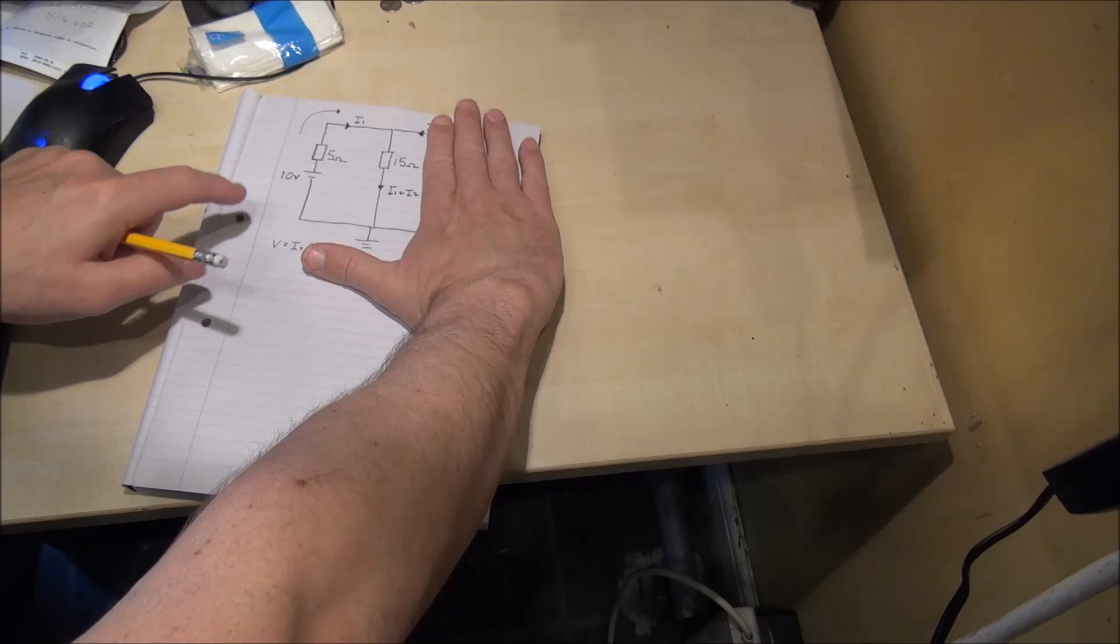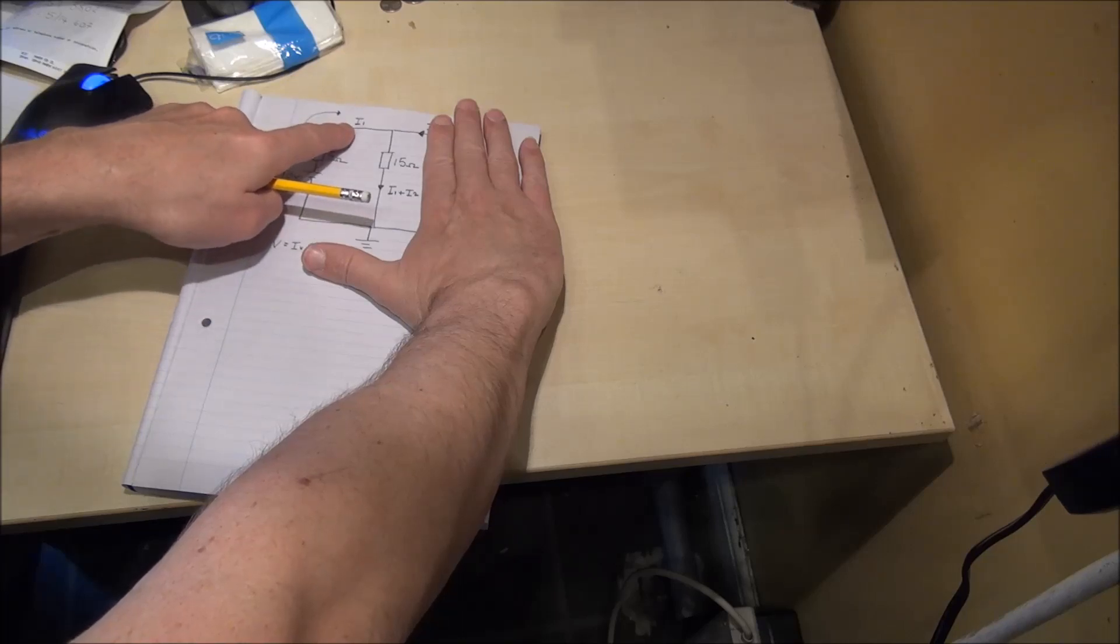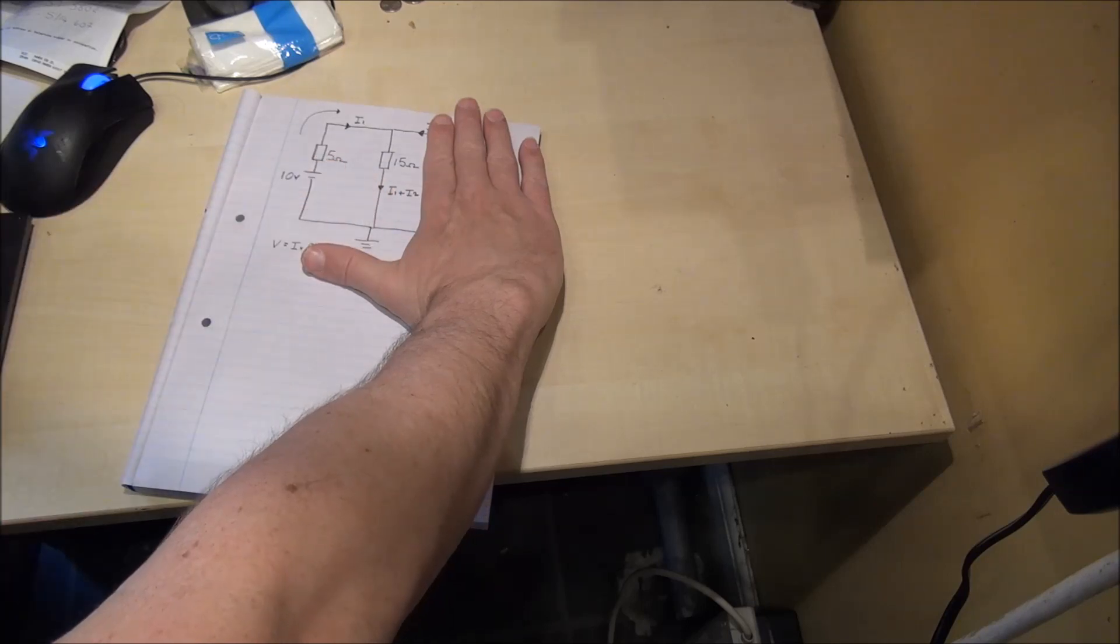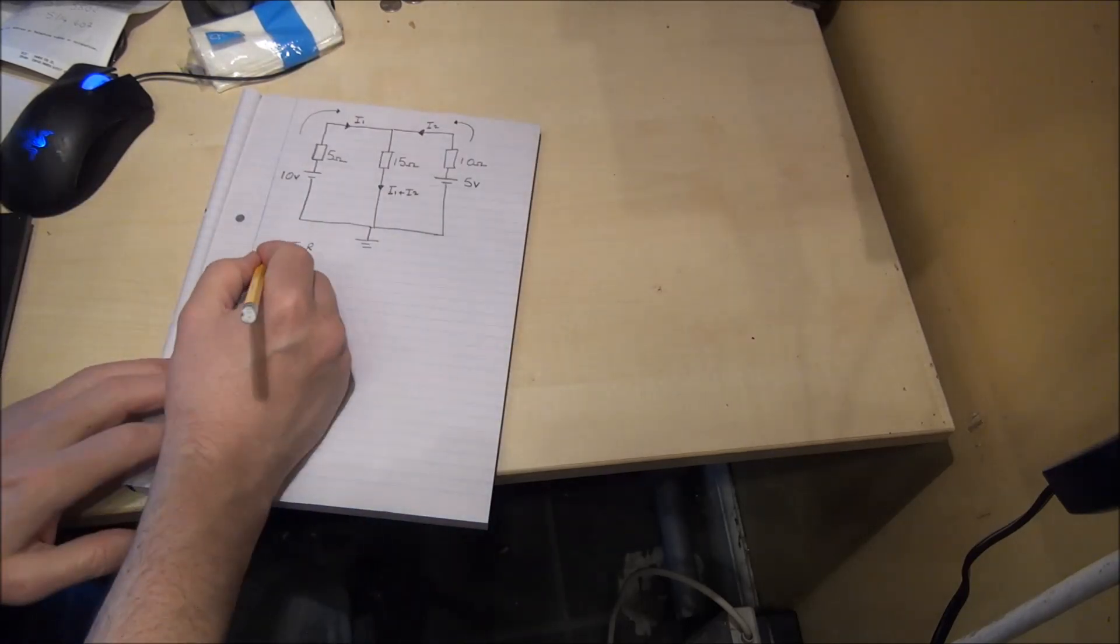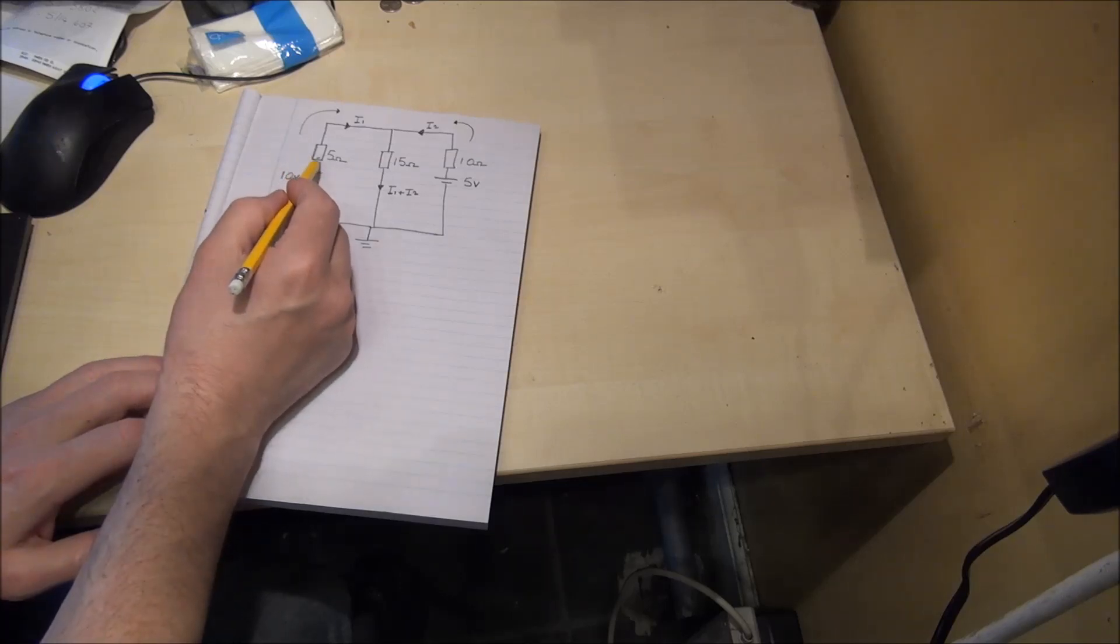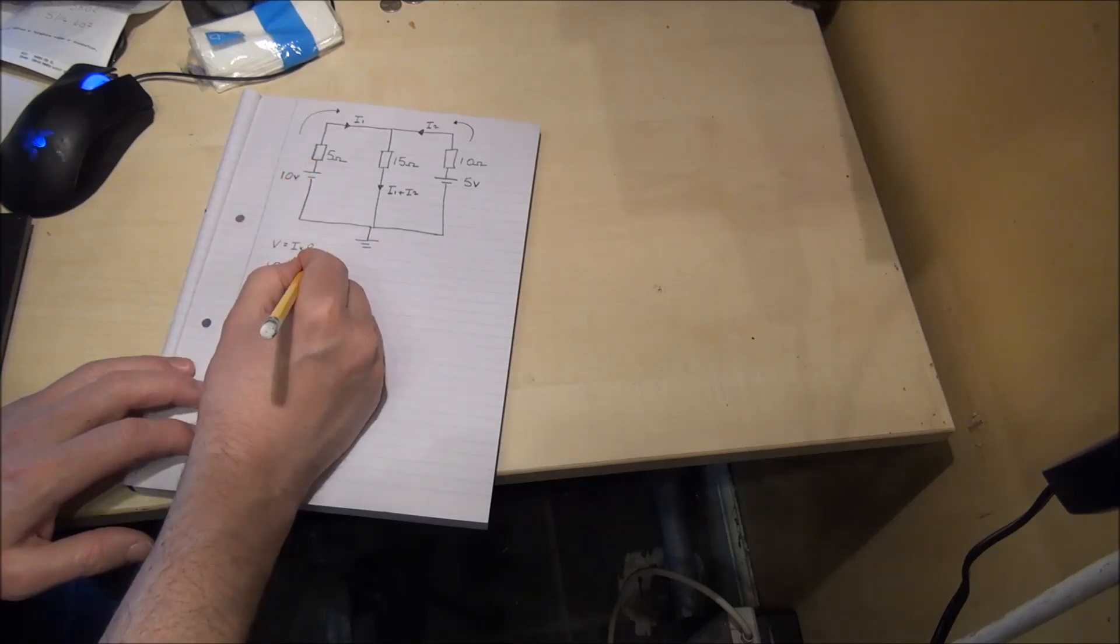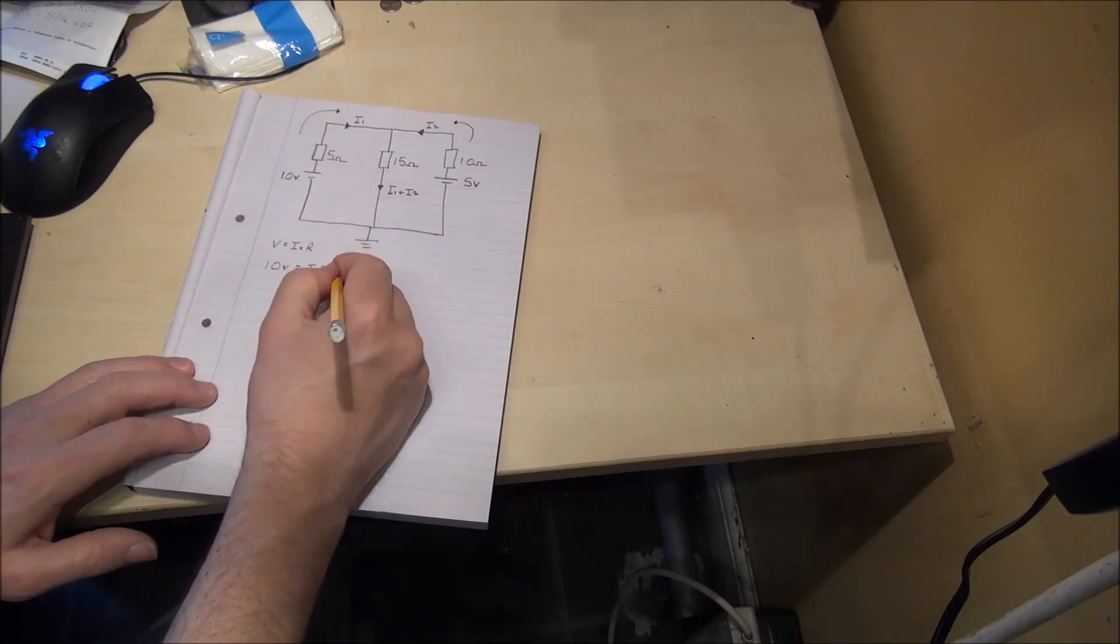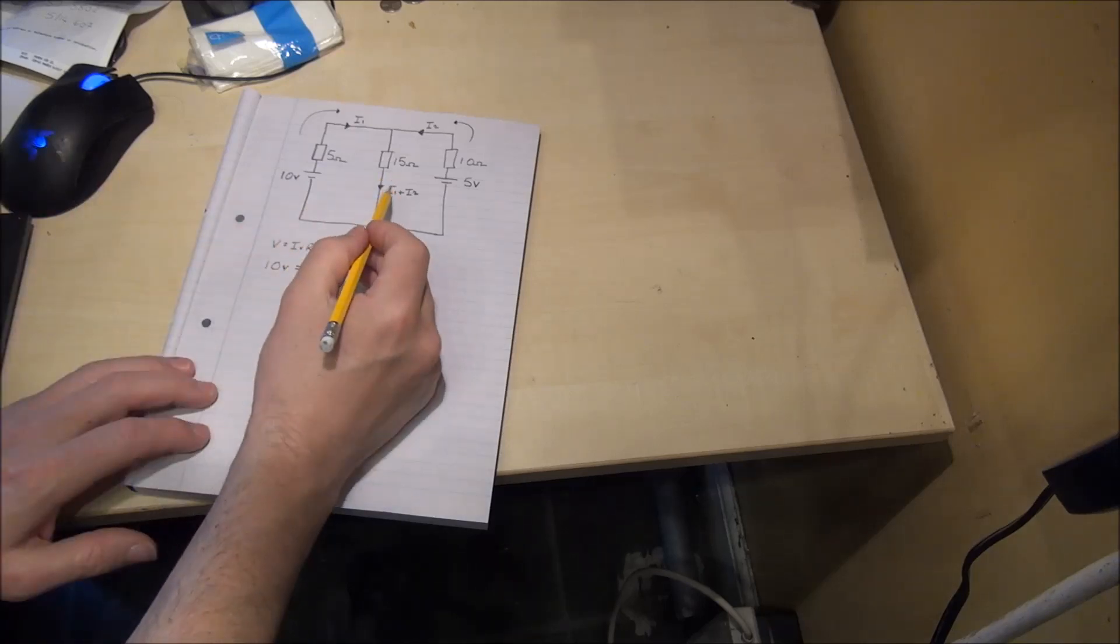Remember voltage is equal to current times resistance. We don't know the currents at the moment but we have two labels for them, I1 and I2. So we can write 10 volts is equal to I1 times 5, that's the current flowing through this resistor here, plus I1 plus I2 times 15.